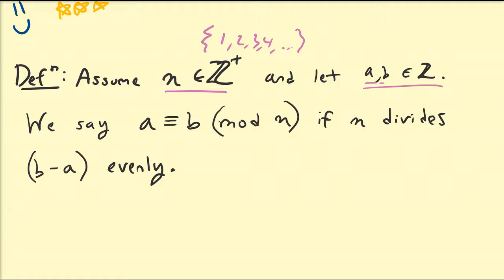Then we say that a is congruent to b modulo n if n divides b minus a evenly. So let us illustrate this definition with an example. True or false.